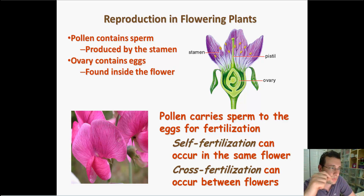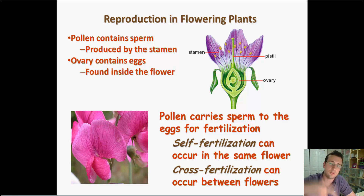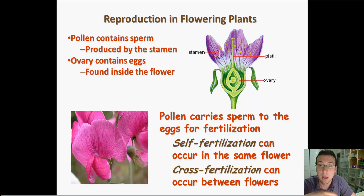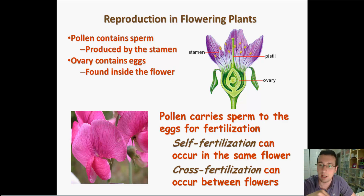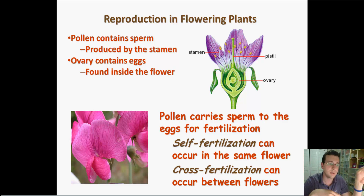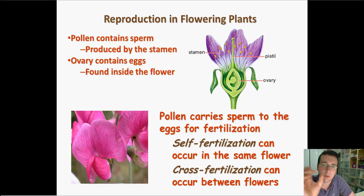This egg is produced by something called the stamen, which is a structure that also stretches from the petals. It's interesting that pea plants and many flowering plants actually have both genders in the same flower. Sometimes a flower only has the pistil or the stamen, but sometimes it has both. Some plants have separate flowers for each gender, but many flowers actually have both pistil and stamen in the same flower, which is very common for flowering plants.